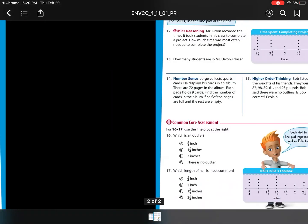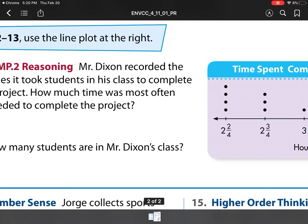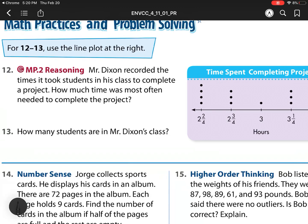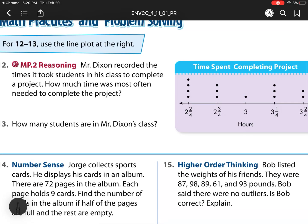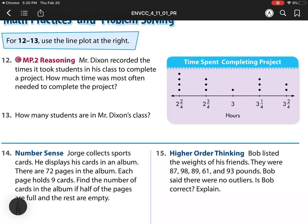So on to our next one. Here we have Mr. Dixon recorded the time it took students in his class to complete a project. How much time was most often needed to complete the project? Well, here I want to use my label. So what is a dot? So a dot is a person or a student. Either one would be acceptable. So which one was the most common or the most often? Well, I look and I see it's 2 hours and 2 fourths. So I'm going to put 2 and 2 fourths with that label of hours.